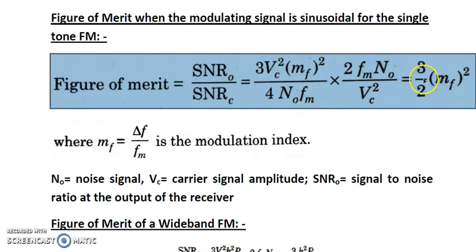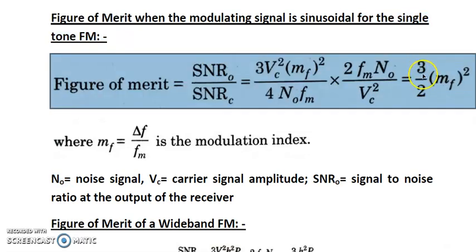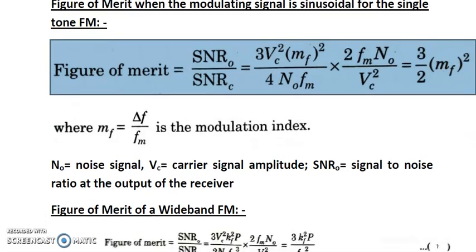By solving all the formulas, for single-tone FM — meaning a baseband signal with only a single frequency — the figure of merit is 3/2 × MF², where MF (beta) is the modulation index for single-tone FM.